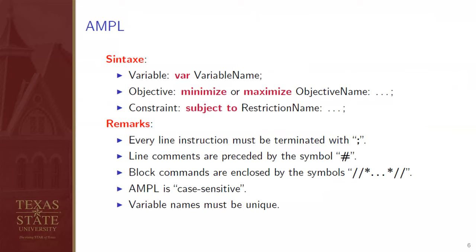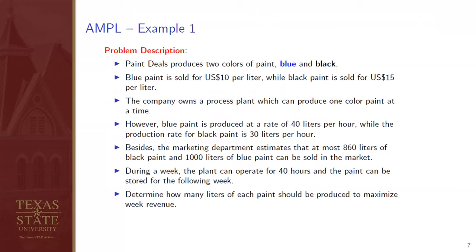In terms of AMPL syntax: variables are declared with the keyword VAR followed by the variable name. The objective is stated using minimize or maximize. The constraints are stated using subject to. Important remarks: every line instruction must be terminated with a semicolon. Line comments are preceded by the hash symbol. Block comments are enclosed by specific symbols. AMPL is case sensitive, and variable names must be unique.